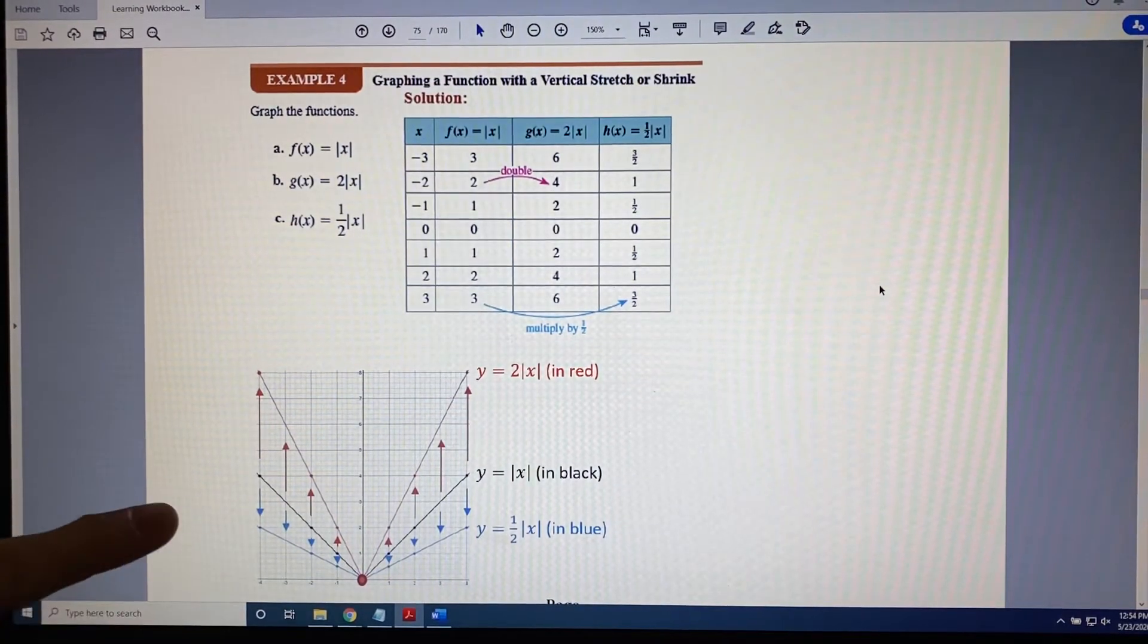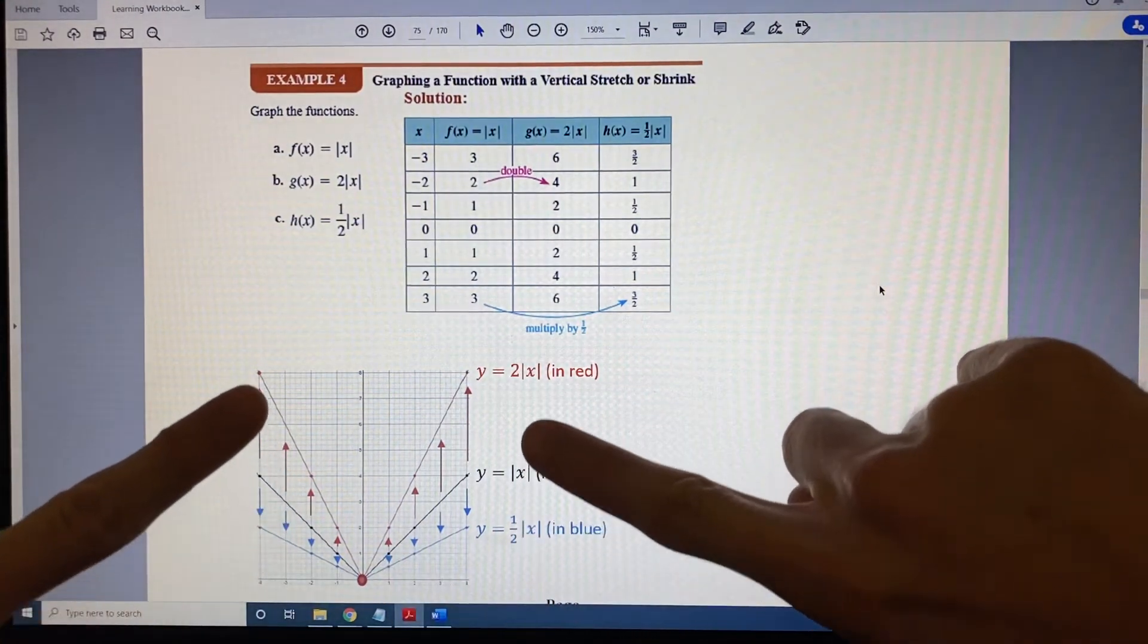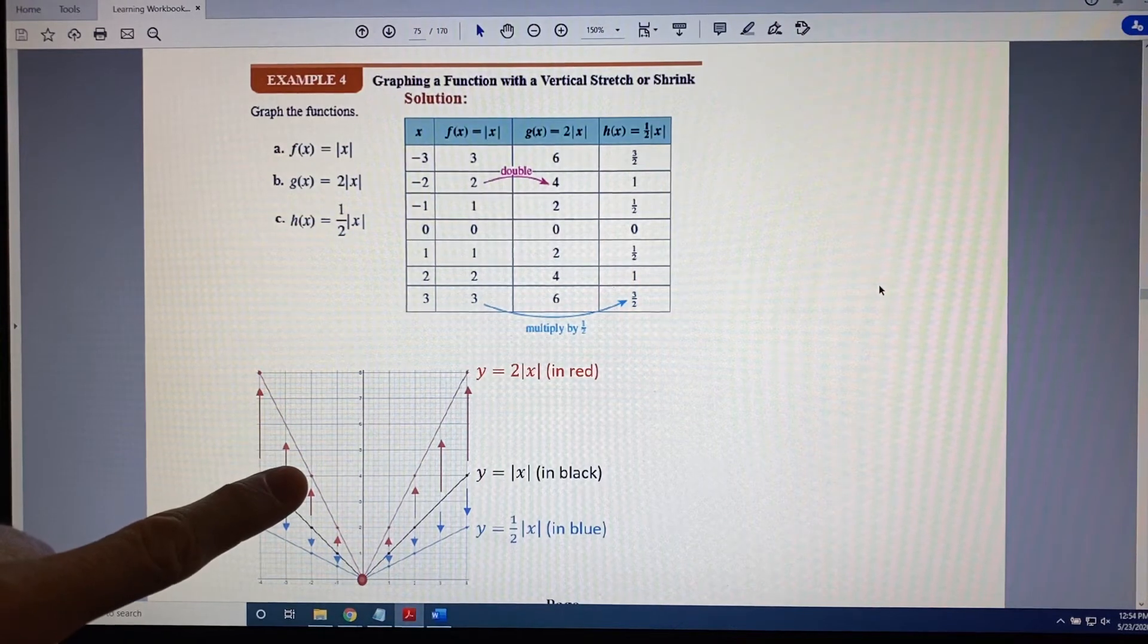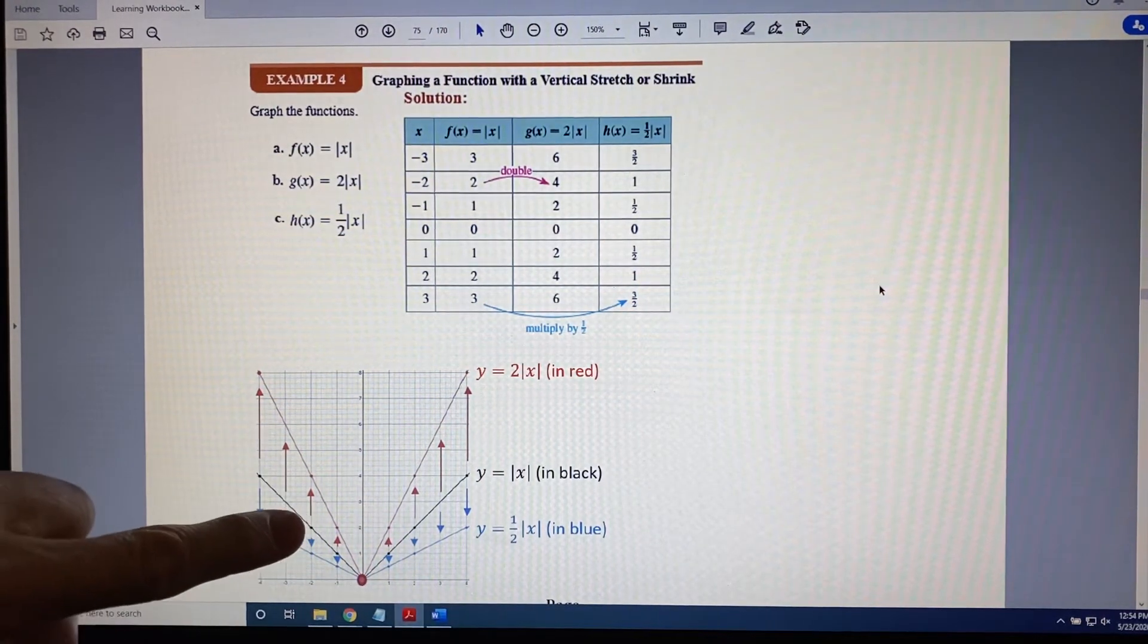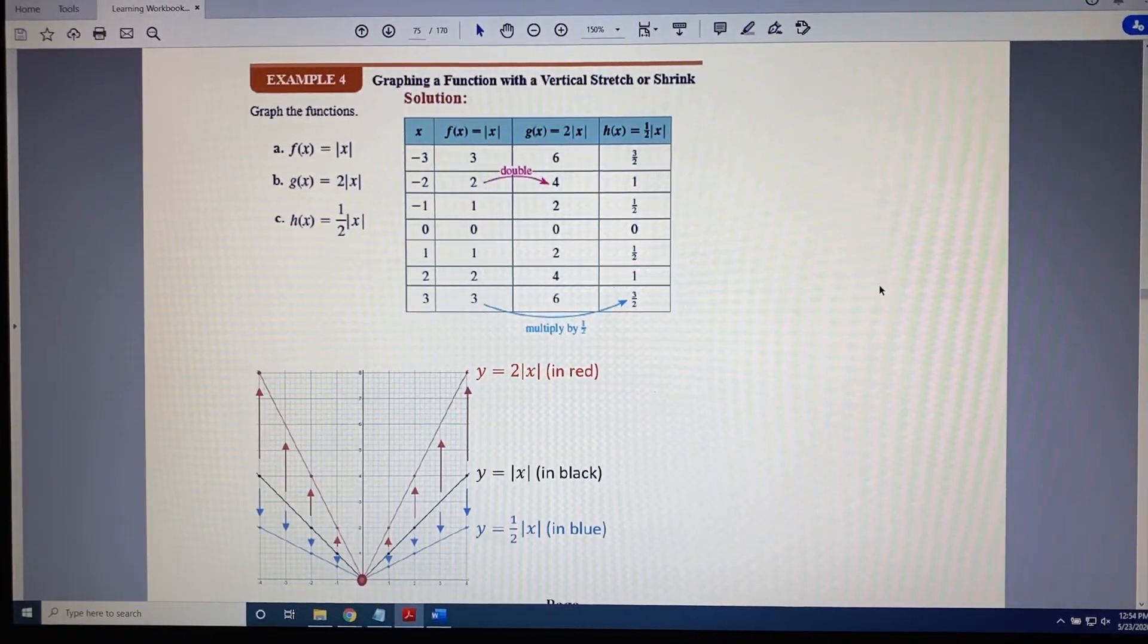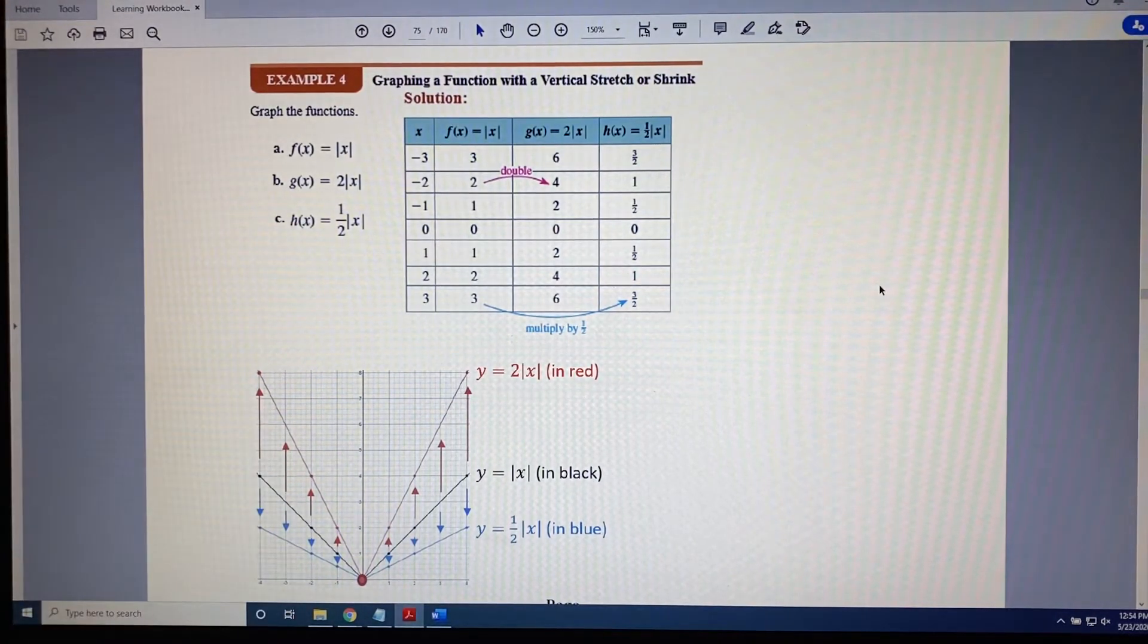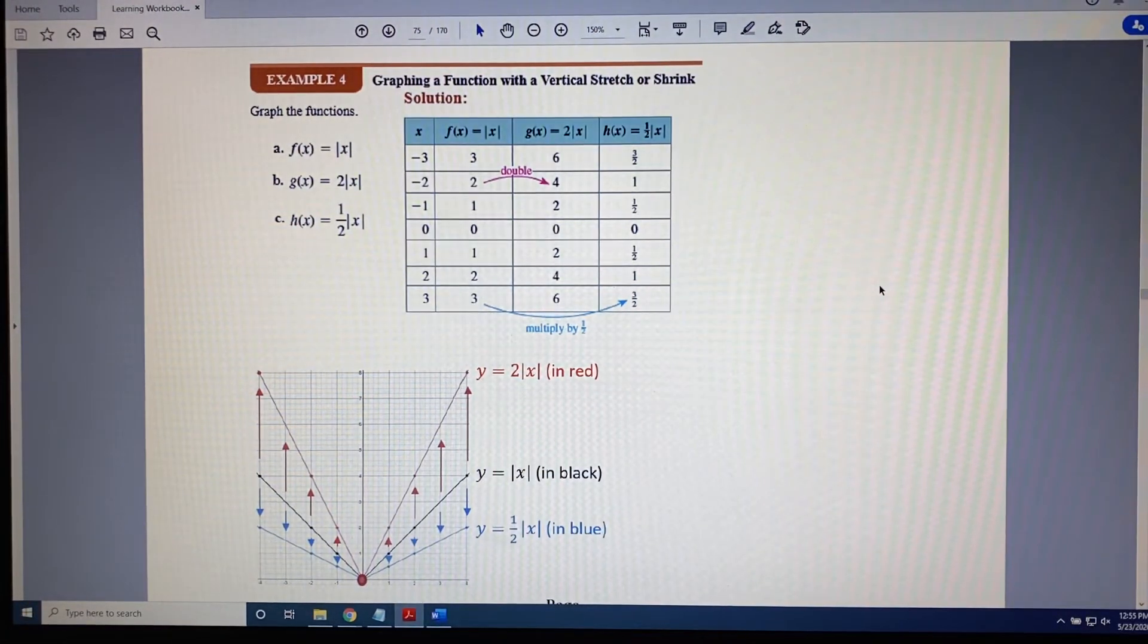And you can see exactly what has happened here. Every point shown in black has now been stretched vertically upward to a new location shown in red. All of the y-coordinates have been doubled. 2 doubles to 4, 4 doubles to 8, and so on. So you can see visually what's going on when you stretch a graph vertically. It's almost like the points are moving directly up. But they don't all move the same distance.